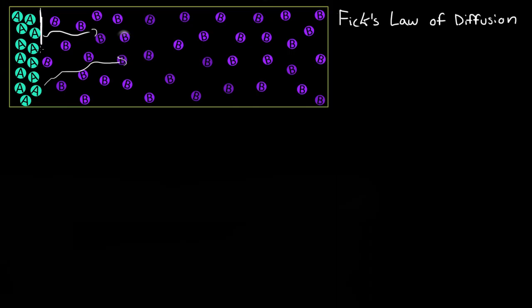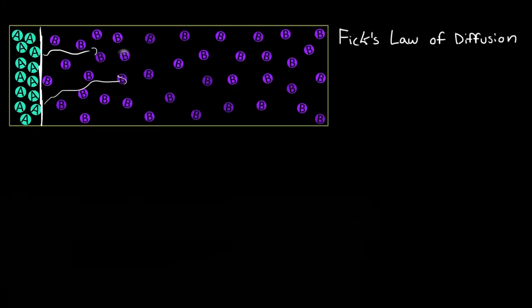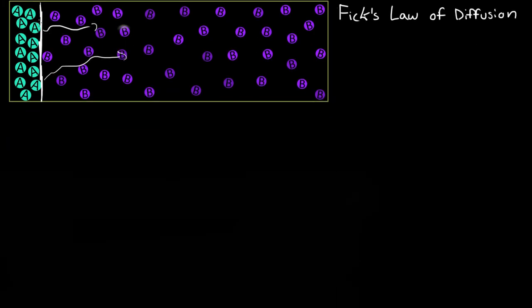So let's say we had some area, and what he said is he basically just measured the number of A particles crossing this area per time. So he had the number of A particles crossing an area per time, and he called this flux.